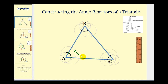That's all we need to construct the angle bisector for angle A. The angle bisector will be the ray that starts at point A and passes through the intersection of these two arcs, something like this. Since this bisects angle A, we know these two smaller angles are congruent and half the measure of the original angle A.